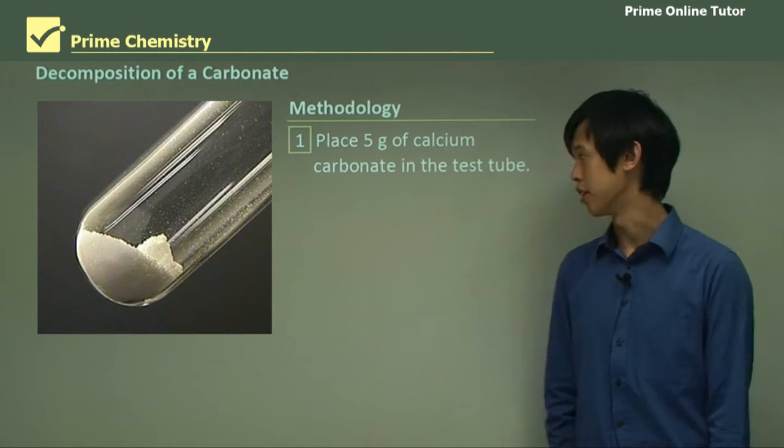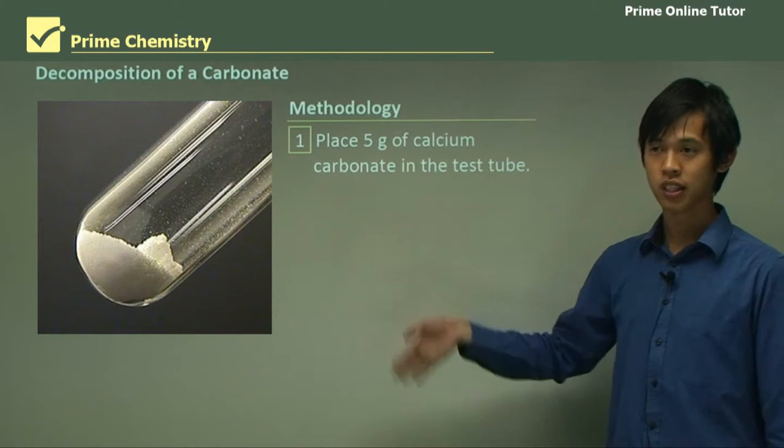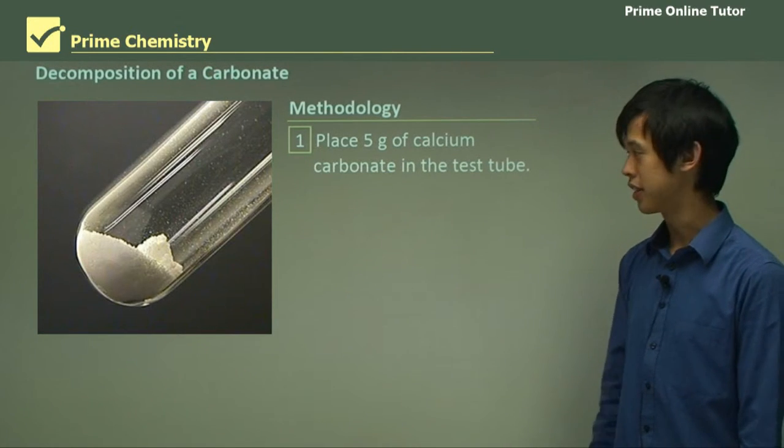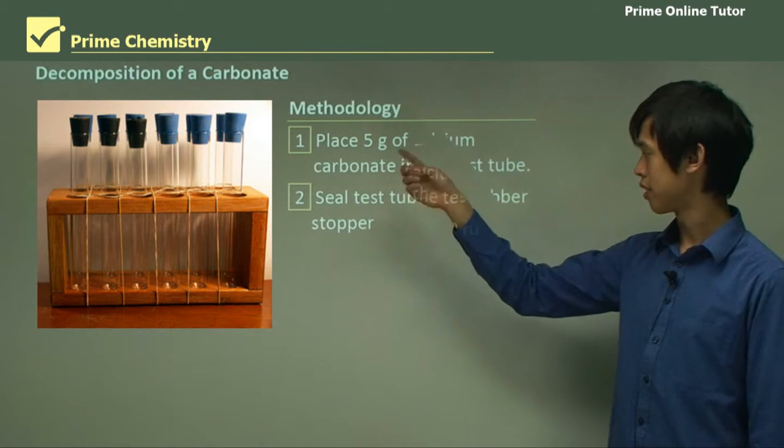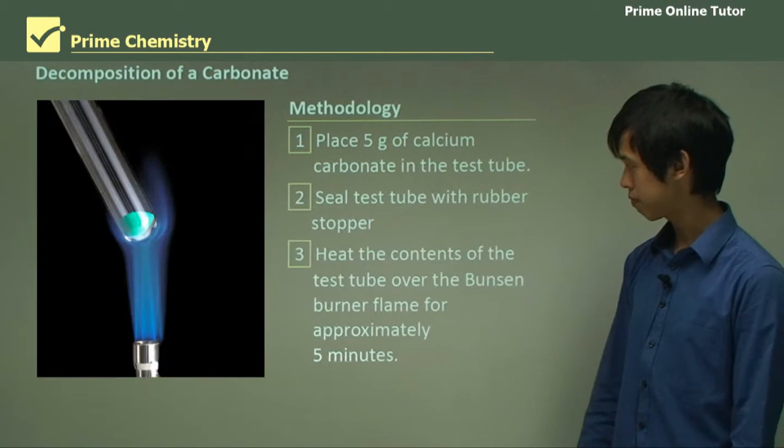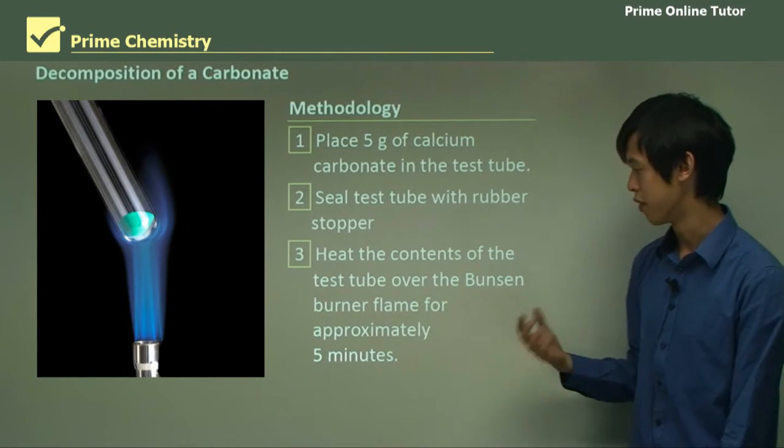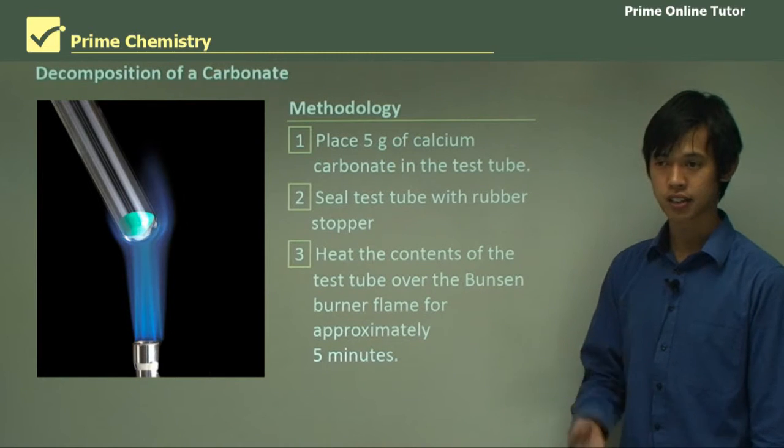So we need a methodology. So we place 5 grams of calcium carbonate in the test tube, like this picture. I'm not sure if that's actually 5 grams, but that's what we are essentially doing. Then we seal the test tube with rubber stoppers, so like that. And then like in the first picture, we heat the contents of the test tube over the Bunsen burner for about 5 minutes. So we're heating the test tube.